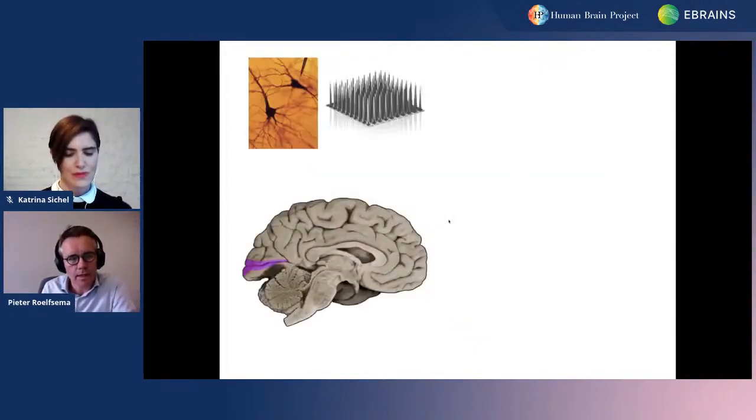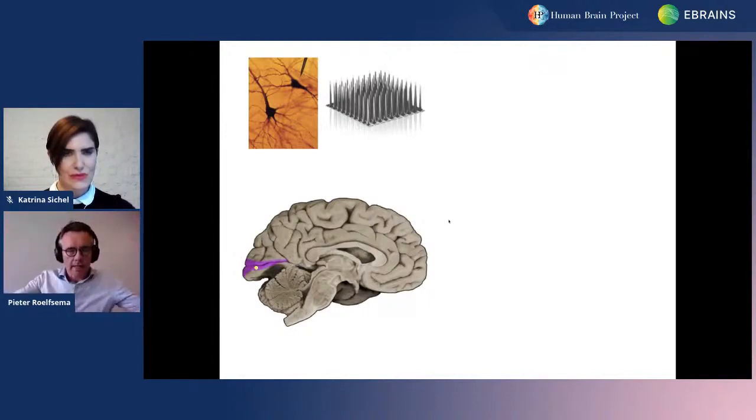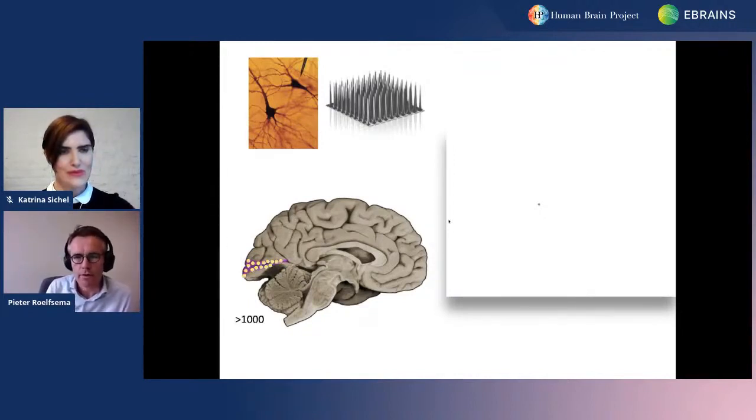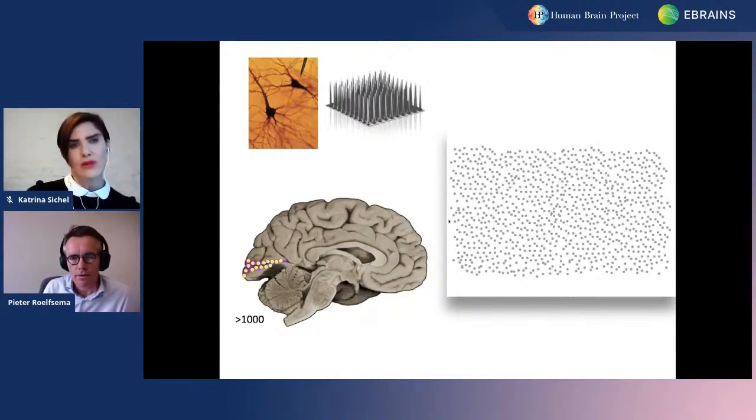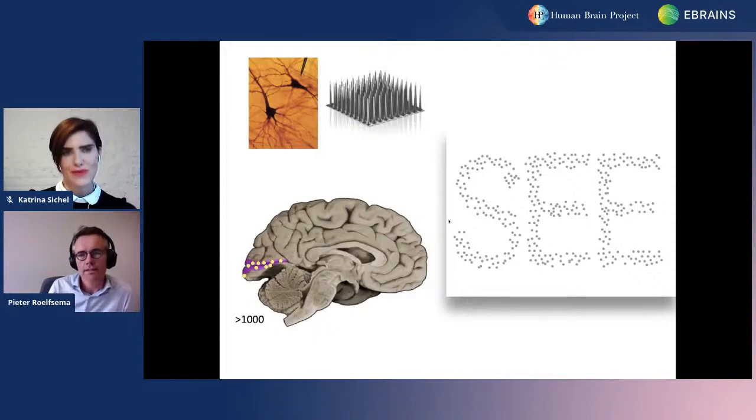If you stimulate electrically a group of neurons in this region of space, it's what we call retinotopy, a layout of the entire visual field in the visual cortex. If you stimulate one of those locations, one group of neurons, a subject, even one that has been blind for a number of years, will see a dot of light at that location in the map where you're stimulating.